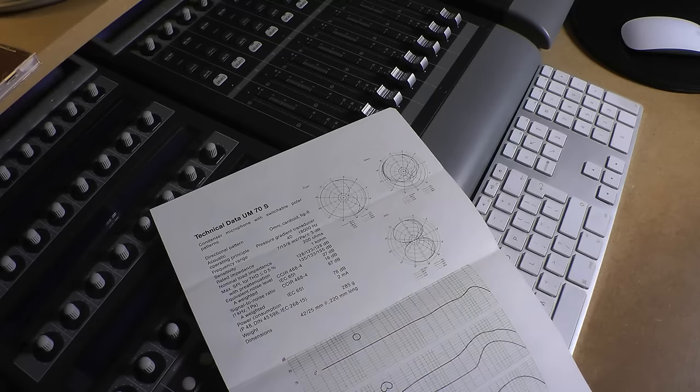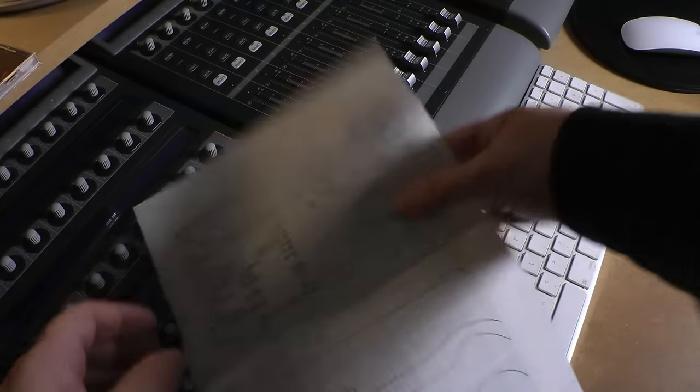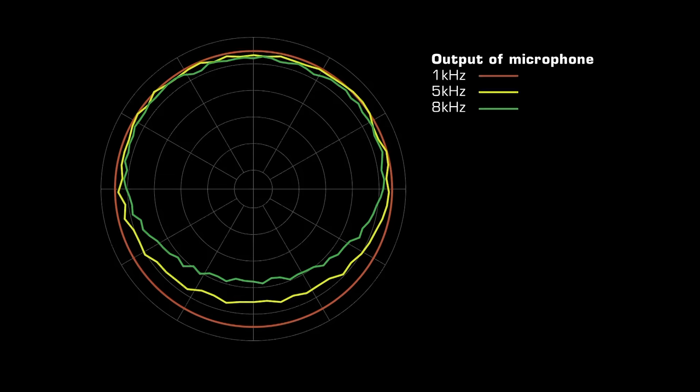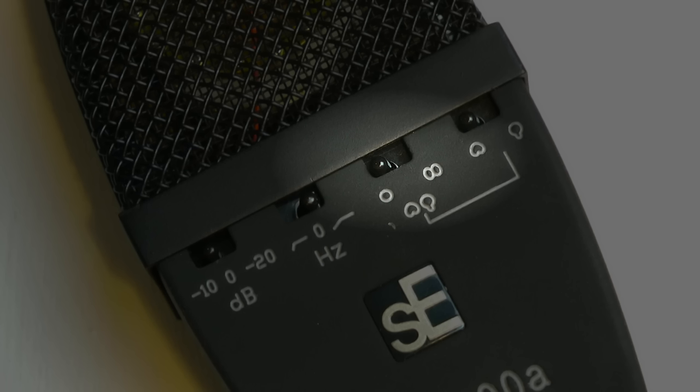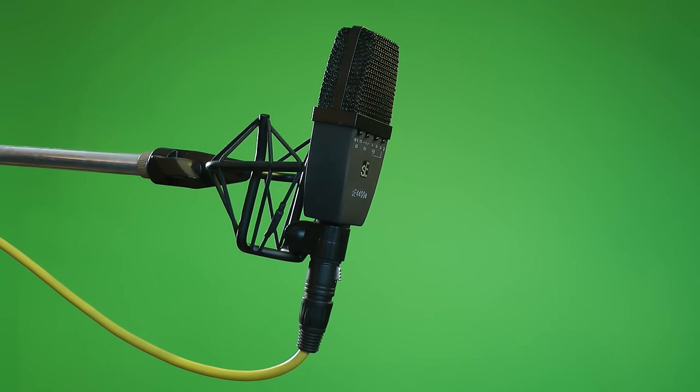A microphone's polar pattern is also important. In general, omnidirectional mics produce the most natural sound, but as they pick up sound from 360 degrees, they are only suitable for situations where a sound source is being recorded within an intentionally selected acoustical space.